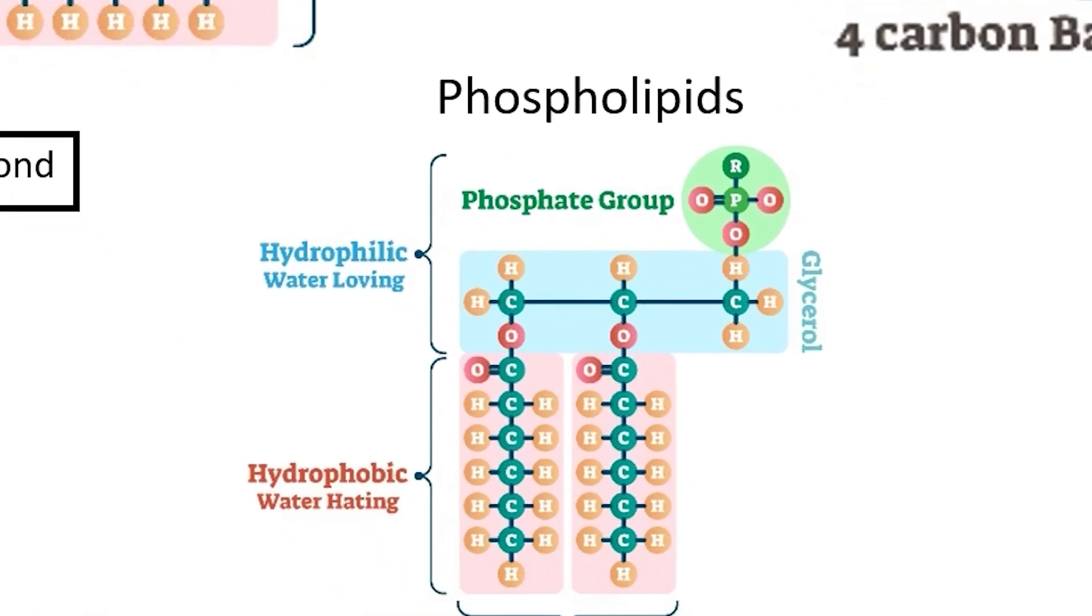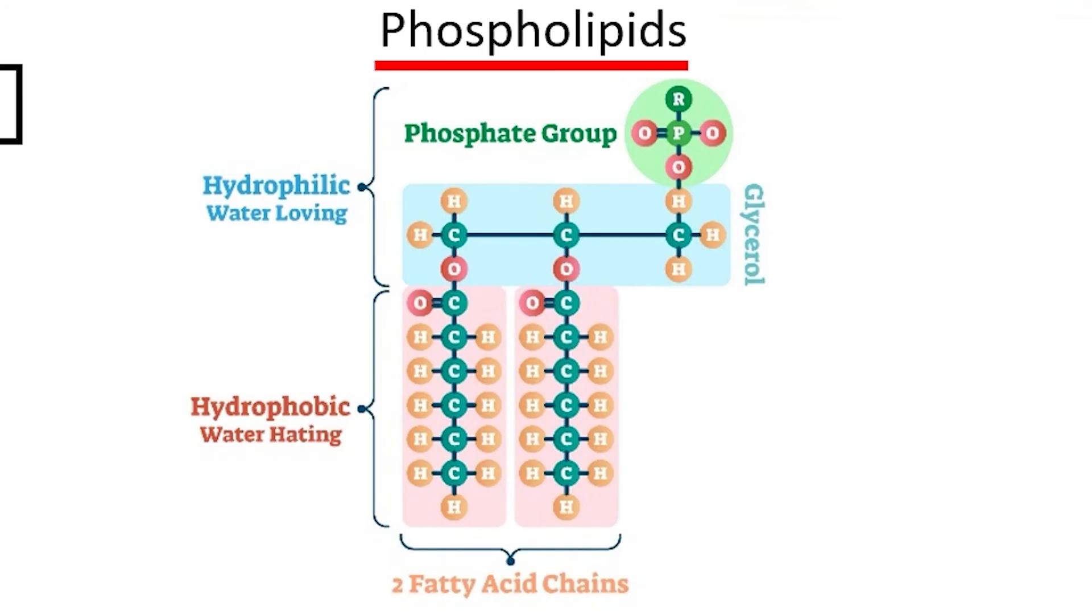By contrast, phospholipid molecules are created using two fatty acids with a hydrophilic group. This hydrophilic head uses the same glycerol molecule, though the third carbon on the glycerol is bonded to a very hydrophilic phosphate group instead of a third fatty acid. Cells use phospholipids to create cell membranes since these molecules will group together into lipid bilayers.